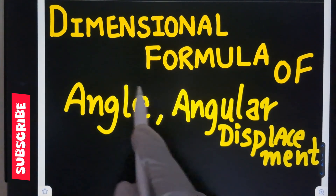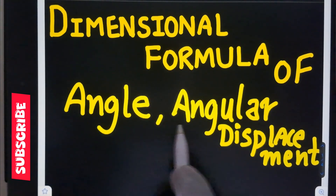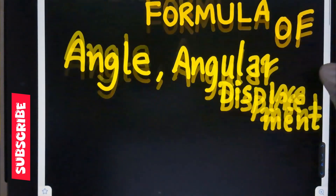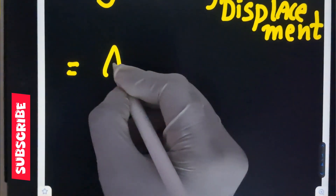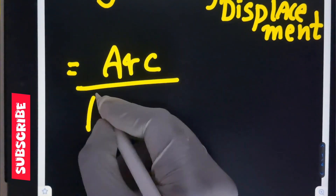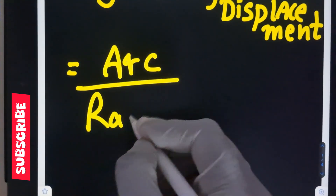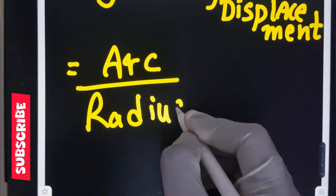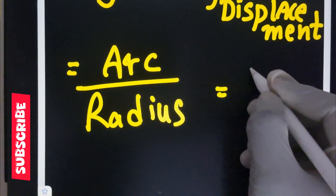To find the dimensional formula of angle and angular displacement, the formula is: angle equals arc divided by radius. Both arc and radius have the same dimensions and units.